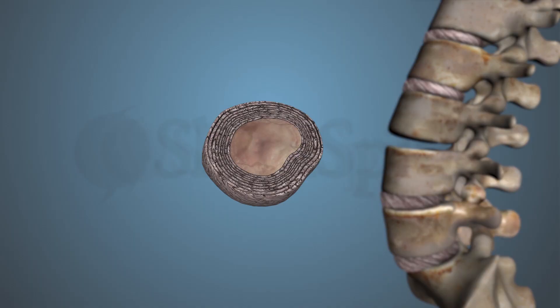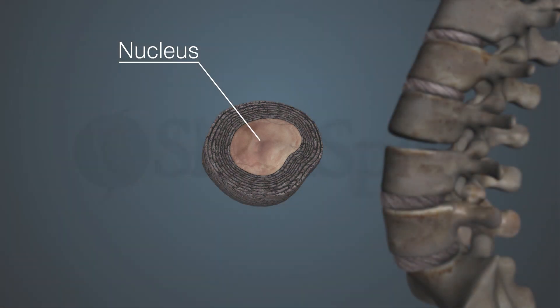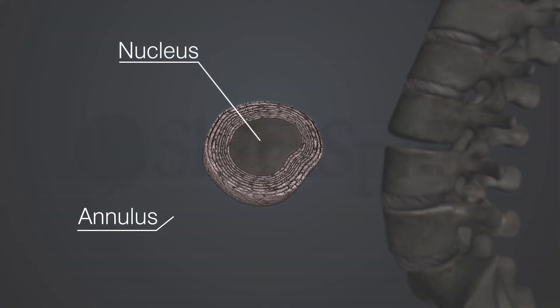A human disc can be described as a jelly donut. The soft jelly-like center part of the disc is called the nucleus proposis. The outer strong fibrous part of the disc is called the annulus.